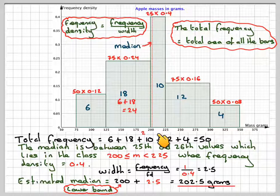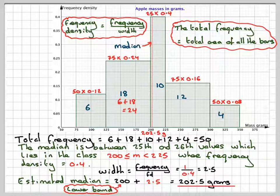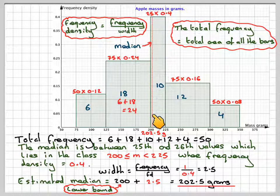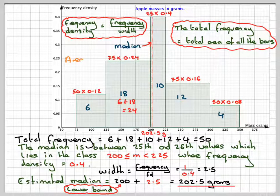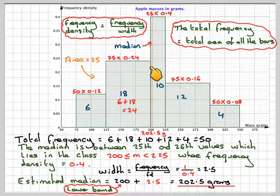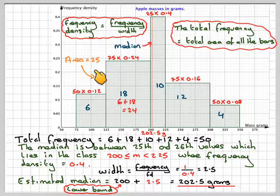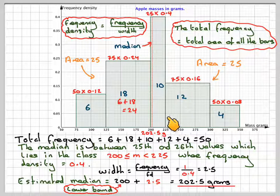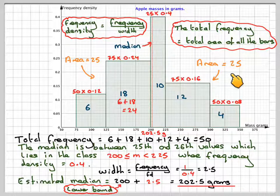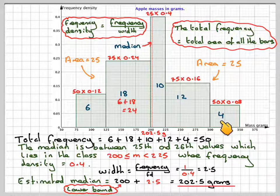So if we mark that on our graph, that's going to be this one here, which is 202.5. Now in order of marking that line on, because we had 50 altogether, the area on that side of the line must represent 25, and the area of this side of the line must represent 25. So this is 9 plus 12 plus 4.